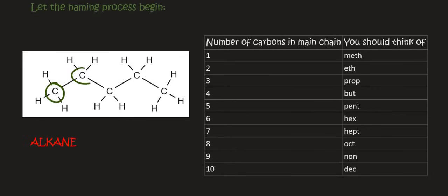But what is the specific name of this one? Well, this one has one, two, three, four, five carbons in the main chain. So we go to our little table and we say, ah, pent. This is pentane.